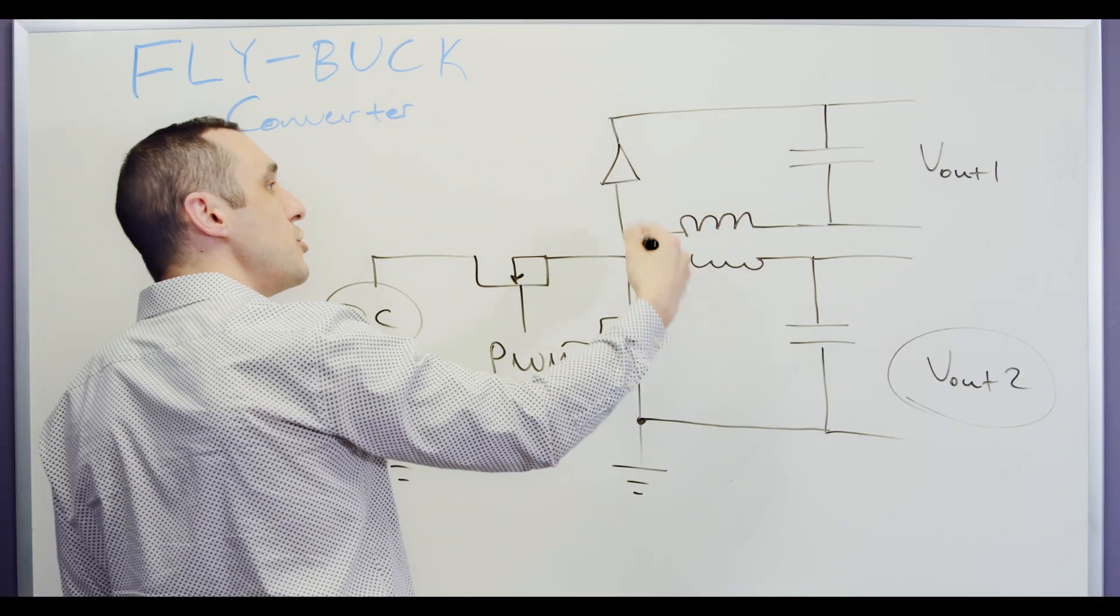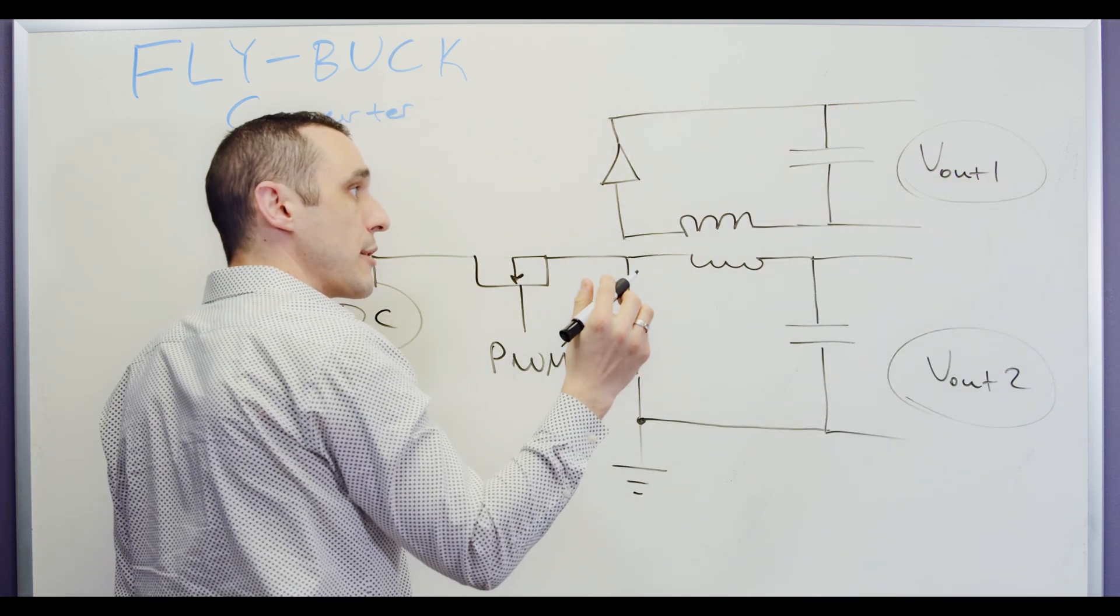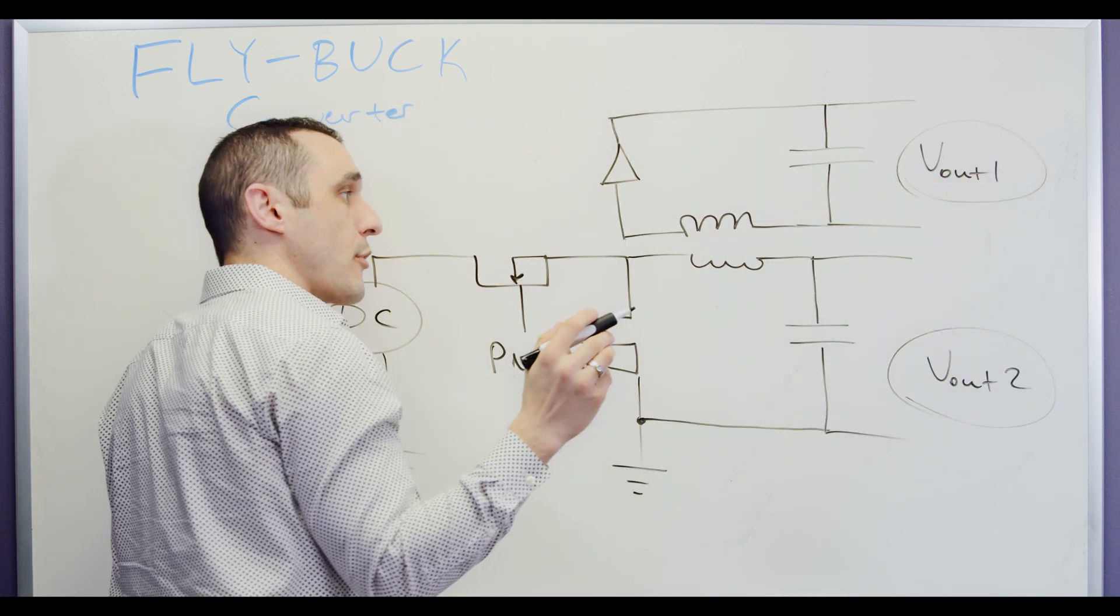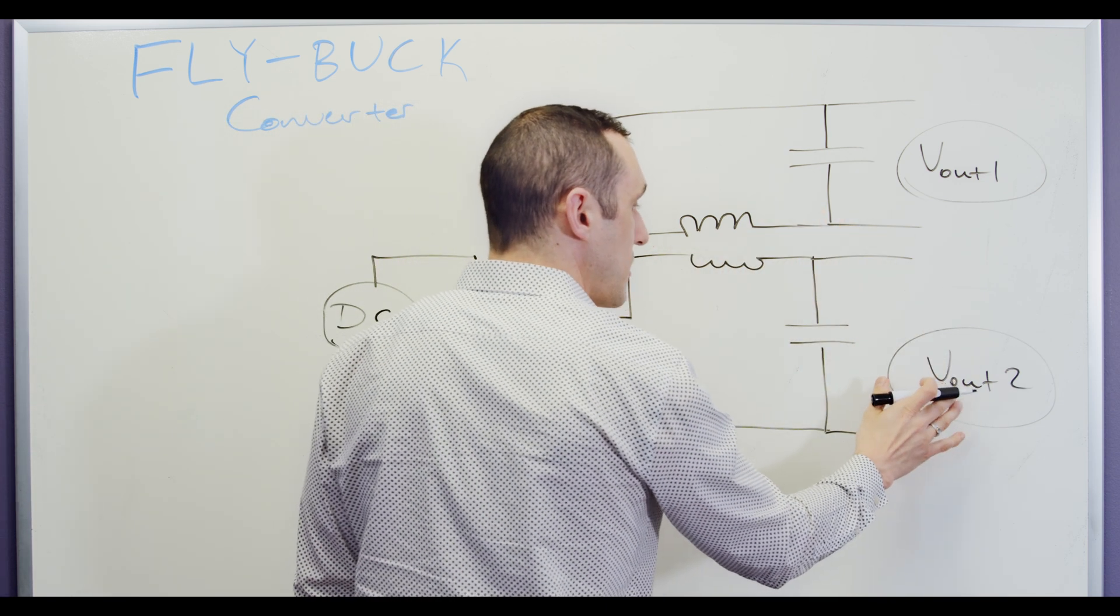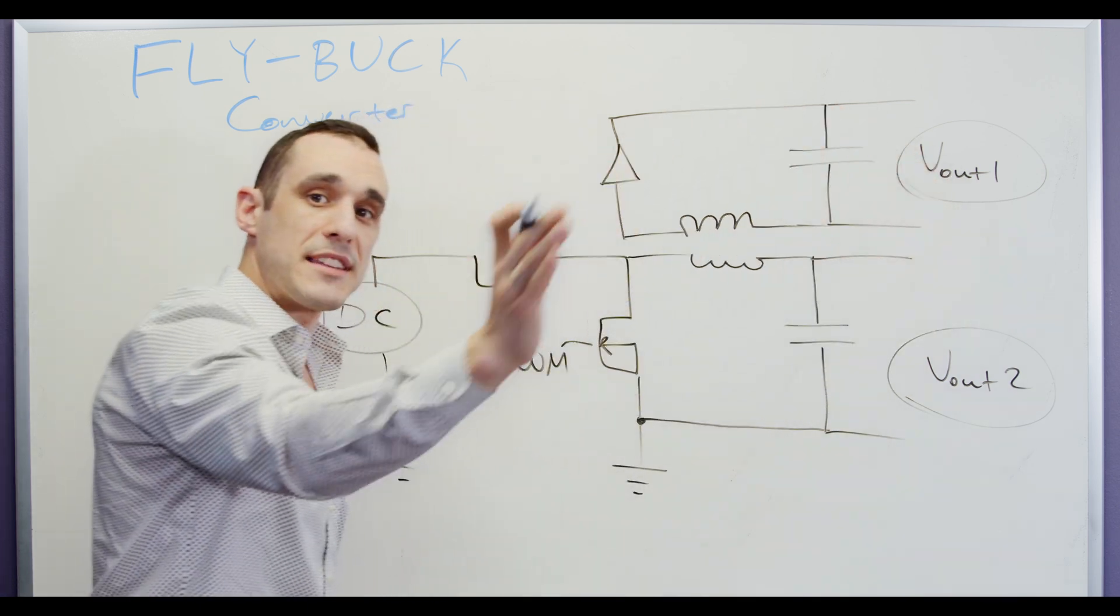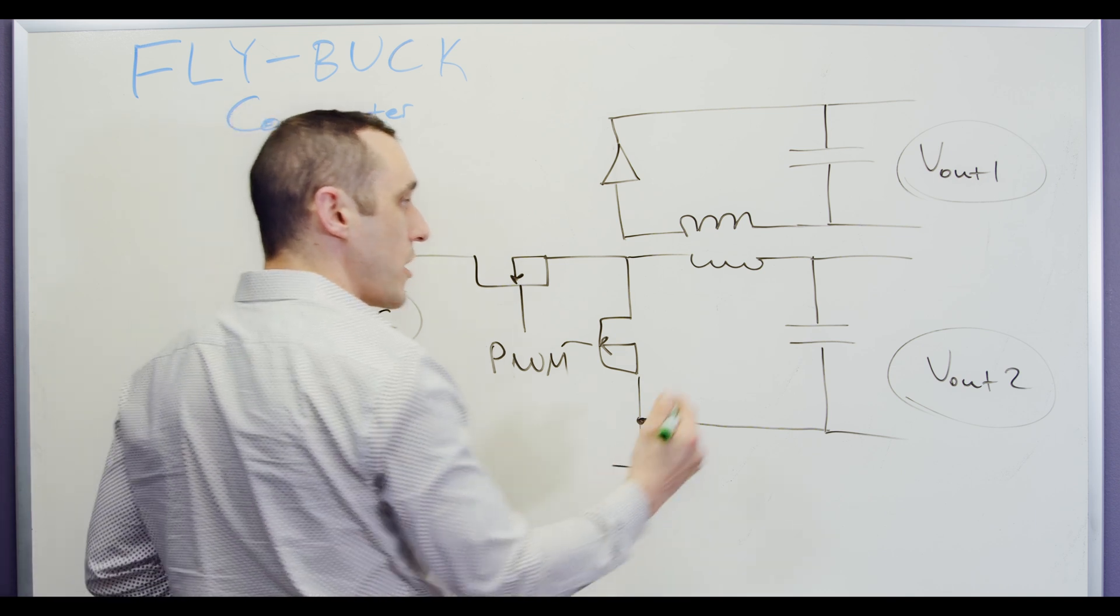The switching signal then induces a voltage vout one over here on this secondary rail. Now this secondary rail is important because of course we can just step down this voltage to this voltage just by taking advantage of the turns ratio between these two coils.